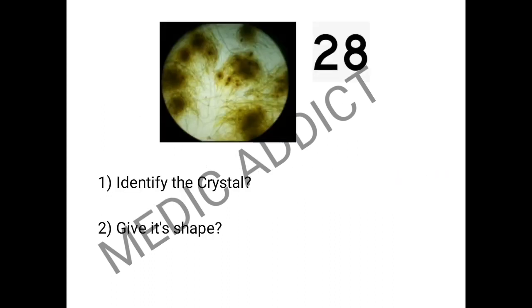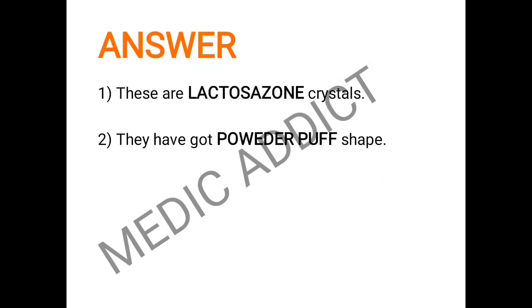Moving to the next spotter, based on the given figure we have to identify the crystal and give its shape. This is one of the simplest spots. There are two other similar spots — maltosazone crystal and glucosazone crystal — which you can find in my other videos. The given spot is the lactosazone crystals, and according to the shape, which is a powder puff shape, we can easily identify the answer as lactosazone.